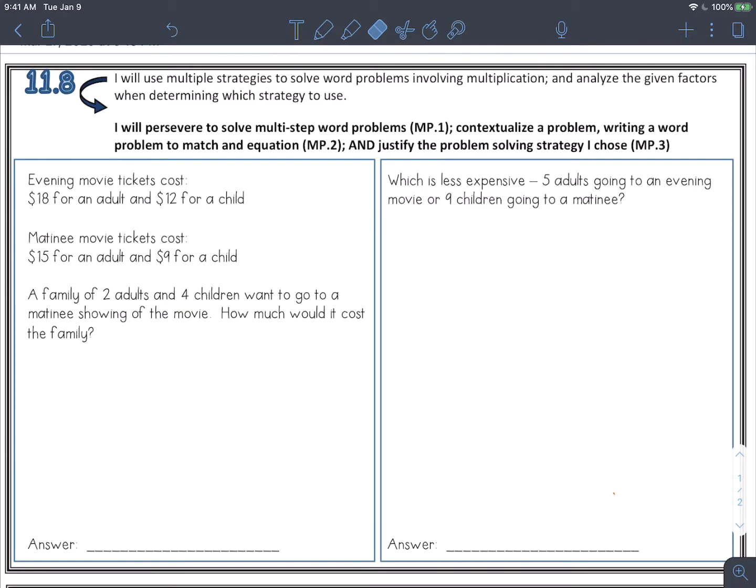We're going to use our different multiplication strategies to solve some word problems today. So the first word problem says evening movie tickets cost $18 for an adult and $12 for a child. Matinee movie tickets cost $15 for an adult and $9 for a child. A family of two adults and four children want to go to a matinee showing of the movie. How much would it cost the family?